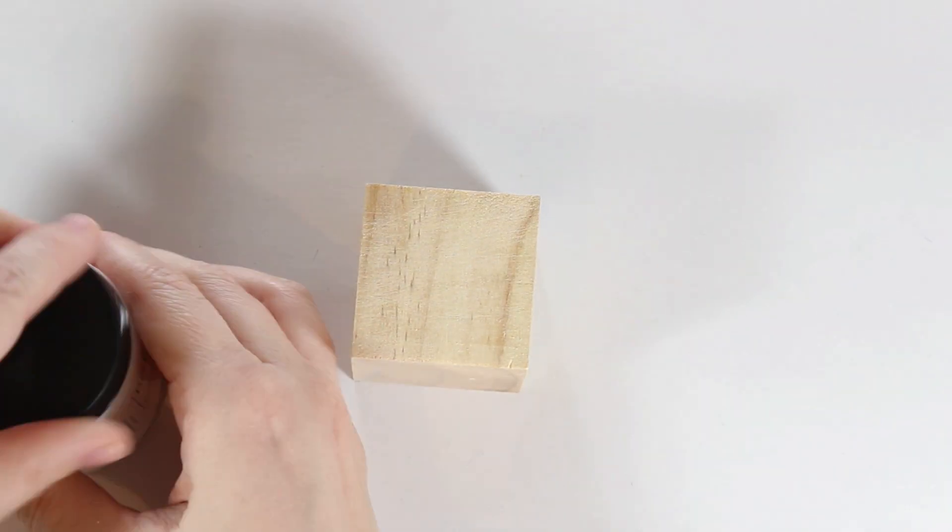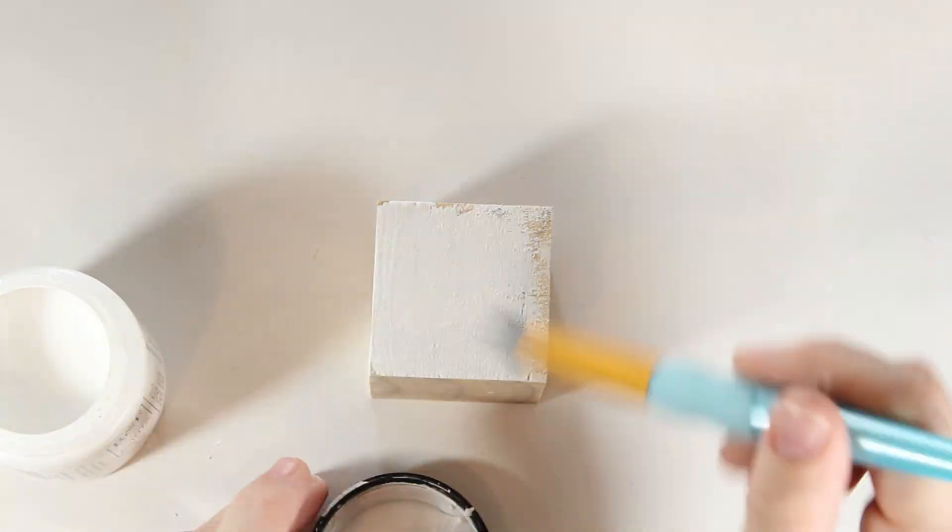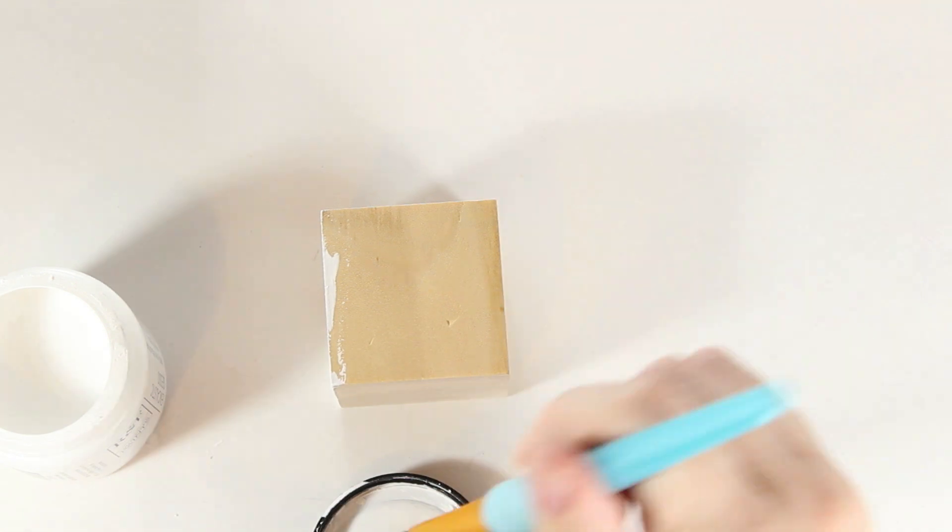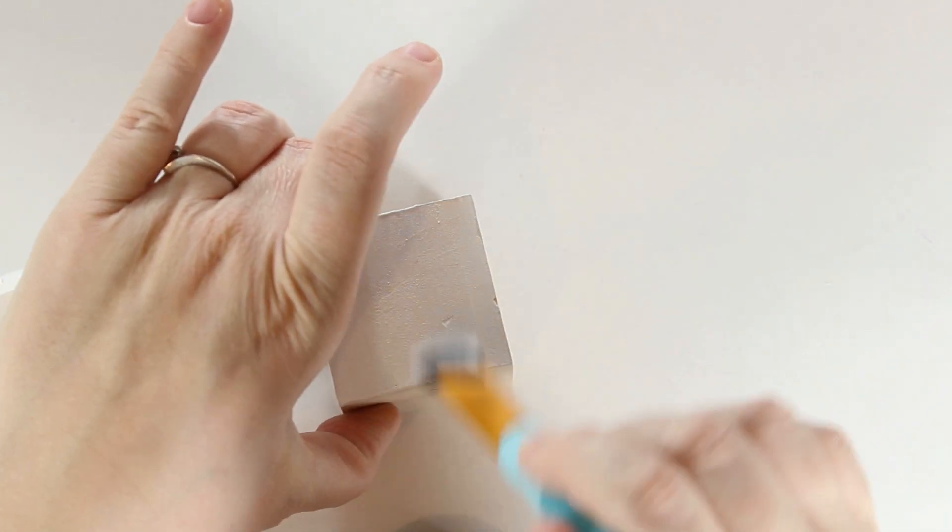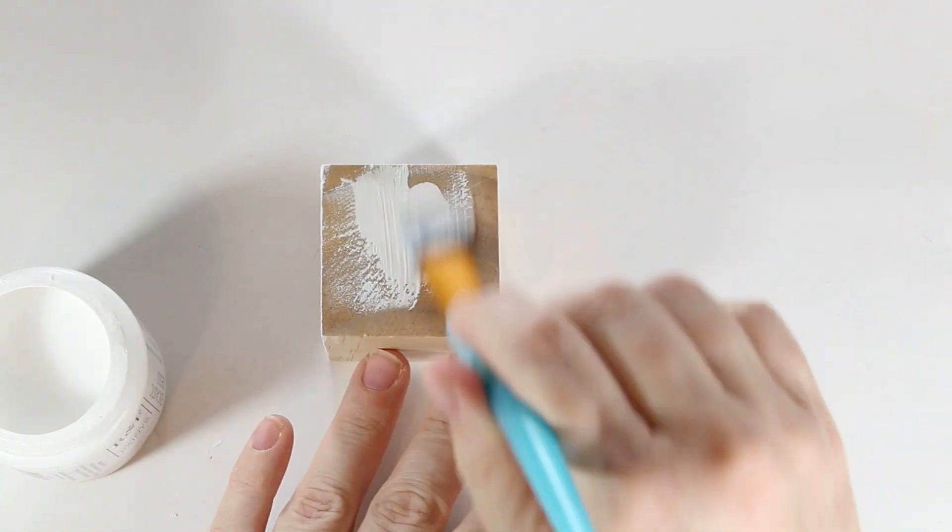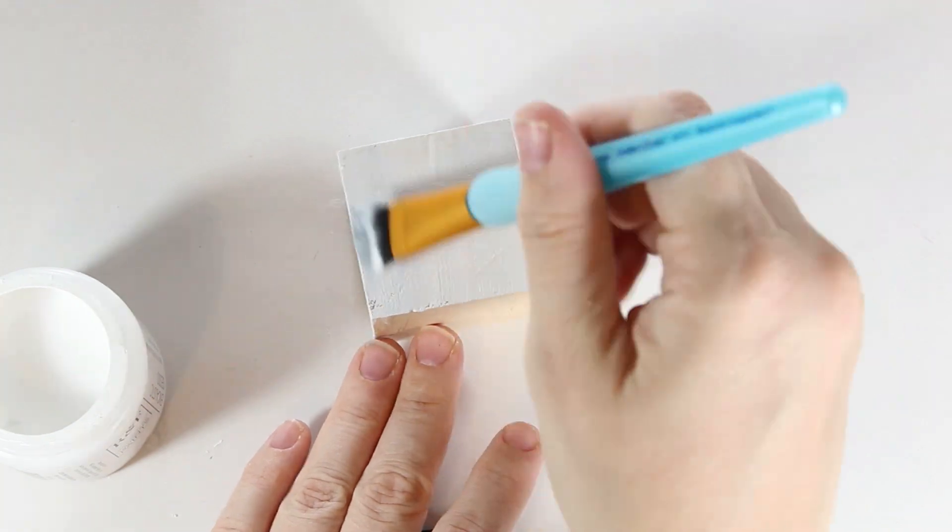When I work with these cubes, I used to just add encaustic medium straight to the wood, but these cubes are, I believe, balsa wood, which is extremely porous, and I would put layer after layer in and it would just sink into the wood. It would be several layers before I could get an actual buildup onto the surface.